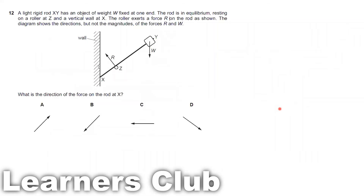Question 12. A rigid rod XY has an object of weight W fixed at one end Y. The rod is in equilibrium, meaning there is no resultant force as well as no resultant moment. It rests on a roller at Z and a vertical wall at X. The roller exerts a force R on the rod in the direction shown.